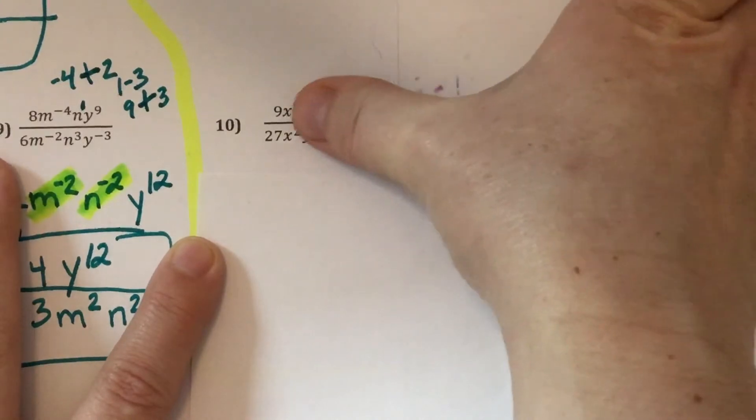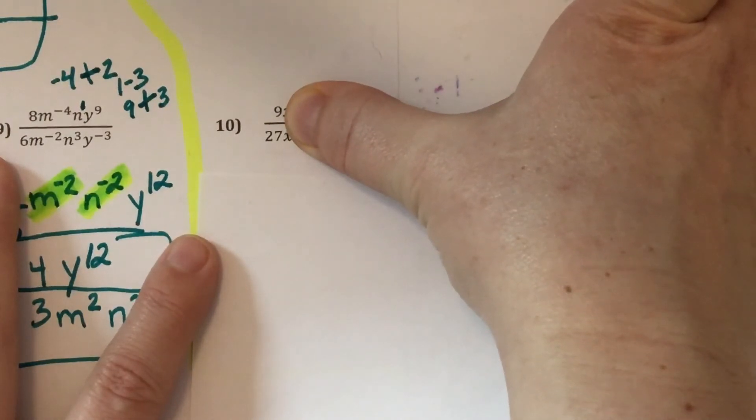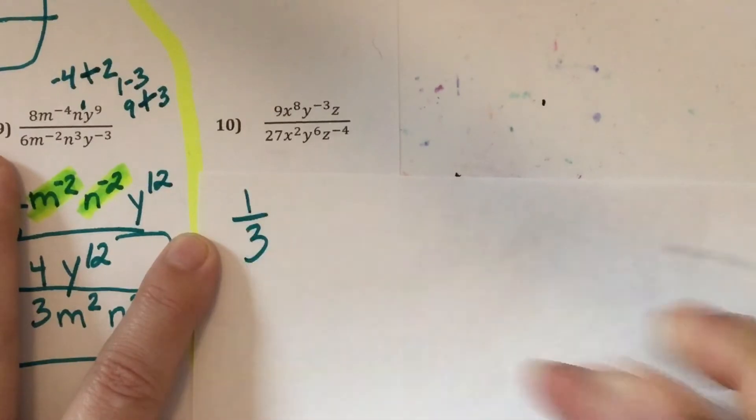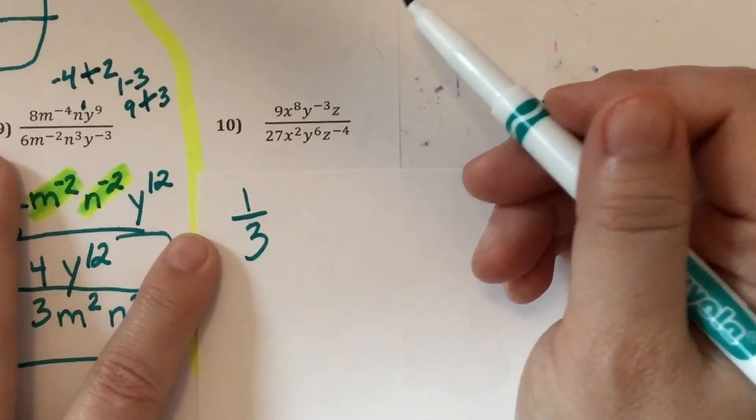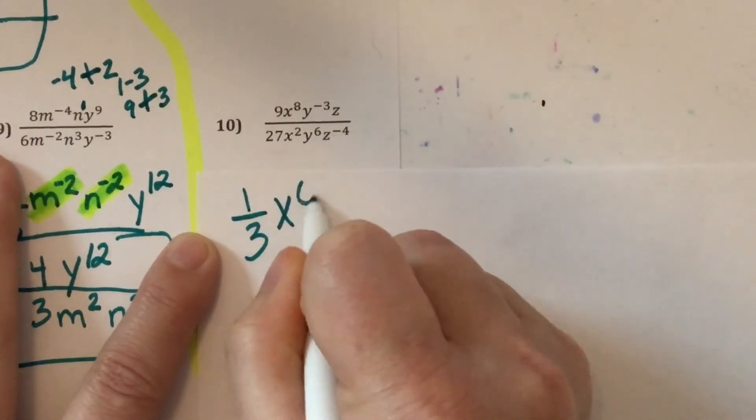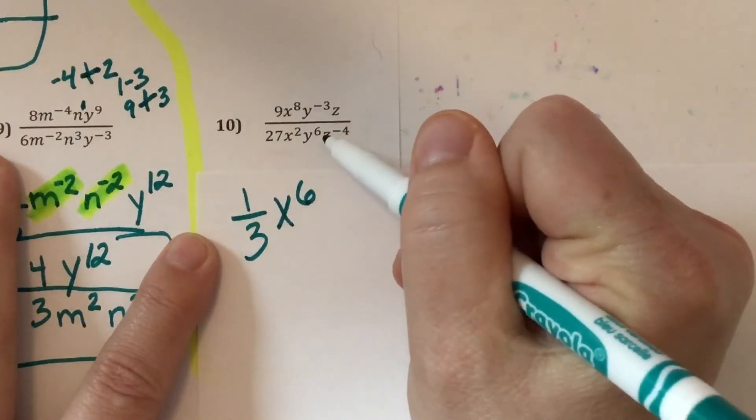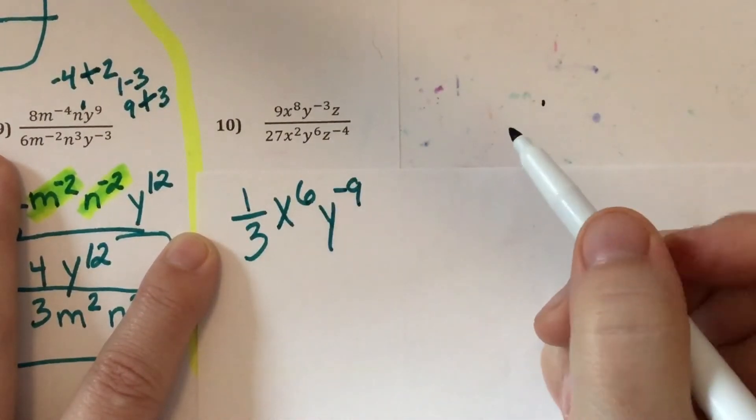Okay and then number 10. So here I have division. So the 9 and 27 are just regular numbers so I am going to divide them. But 9 doesn't divide by 27 nicely. So 9 divided by 27 reduces to 1 third. And then exponents you subtract. When you divide you have to subtract. So 8 minus 2 that makes 6. Negative 3 minus 6 that makes negative 9.